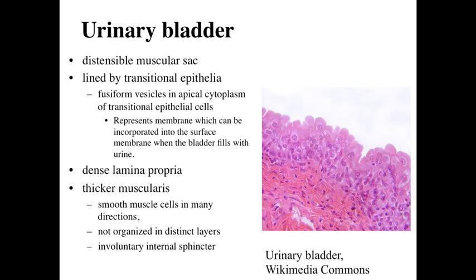Underlying this transitional epithelia, like we've got underlying most or all epithelia, we're going to have a lamina propria. And then deeper to that, we're going to have a very thick muscularis with smooth muscle cells in many different orientations. Keep in mind that with the urinary bladder as a muscular sac, you want to be able to stretch and fill, but when it's time to void the bladder, you want to be able to constrict it as much as possible to completely compress down on the urinary bladder and empty it. Within the muscularis, we're going to have an involuntary internal sphincter — a smooth muscle sphincter — which is going to close off the opening between the urinary bladder and our urethra, to regulate the flow of urine from our urinary bladder to our urethra.